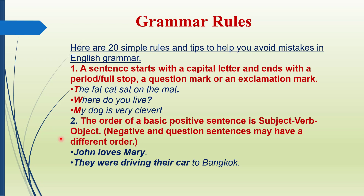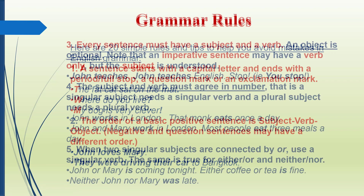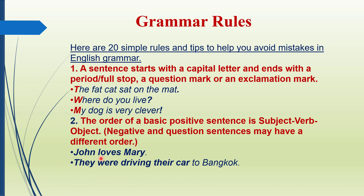Aam sentence hota hai — positive sentence. Yisko hum basic sentence kehte hain. Bilkul start wala — us pe sab se pehle subject hota hai. Jab hum sentence banate hain, aapko subject likhna hai, phir verb likhna hai, aur object likhna hai. Agar aapko pata hai ke yeh teenonon cheezein kya hoti hain, toh aap aasani se sentence bana saktay hain. An example: 'John loves Mary.' First, John is the subject, loves is the verb, and Mary is the object.